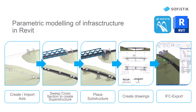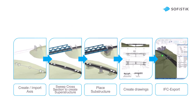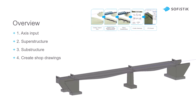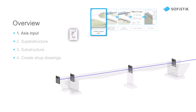In the course of this Getting Started, I will walk you through the major steps of a typical Revit infrastructure project. Here we have an overview of the four steps that we will take. In the first one, I will show you how to create and import an axis alignment.